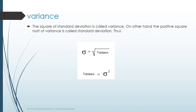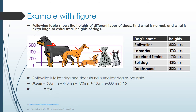Let's see variance, which is another type of absolute dispersion. The square of the standard deviation is called variance. On the other hand, the positive square root of variance is called standard deviation. Thus, standard deviation equals the square root of variance, or equivalently, variance equals SD squared. In this slide, I have discussed one basic example along with a table and graph to illustrate what standard deviation and variance are, and how they differ.